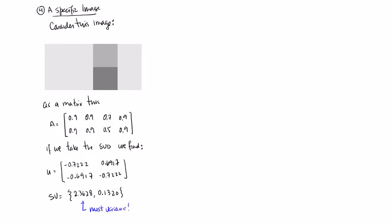So most of the variance here we can see is in that first direction. In fact, if you do the calculation, this actually contains 99.69 percent of the variance. So u1 accounts for 99.69 percent of the variance.